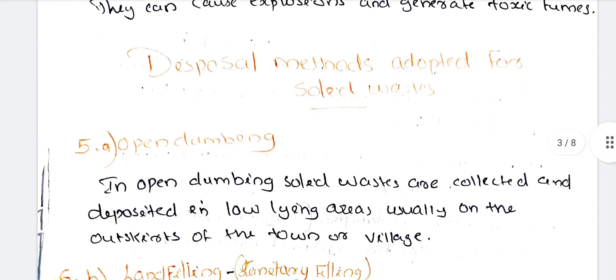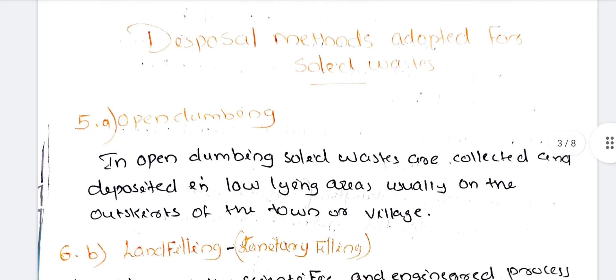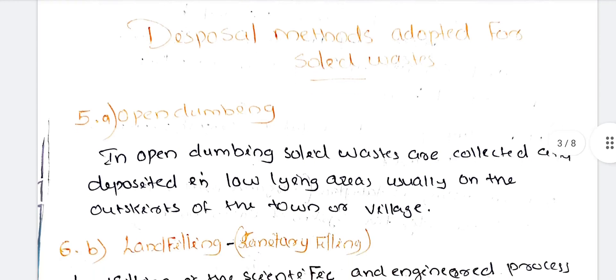Disposal methods. First: open dumping. In open dumping, solid wastes are collected and deposited in low-lying areas, usually on the outskirts of a town or village. In remote areas, waste is dumped openly.